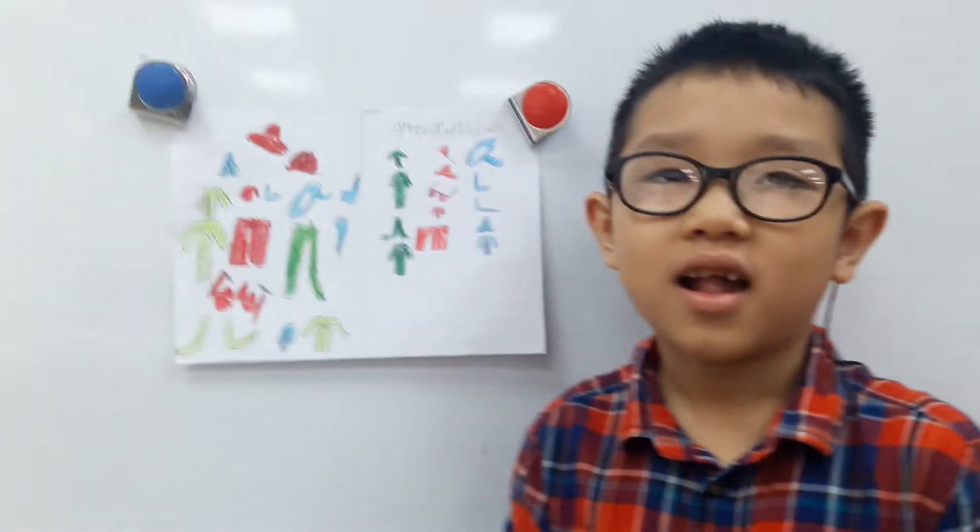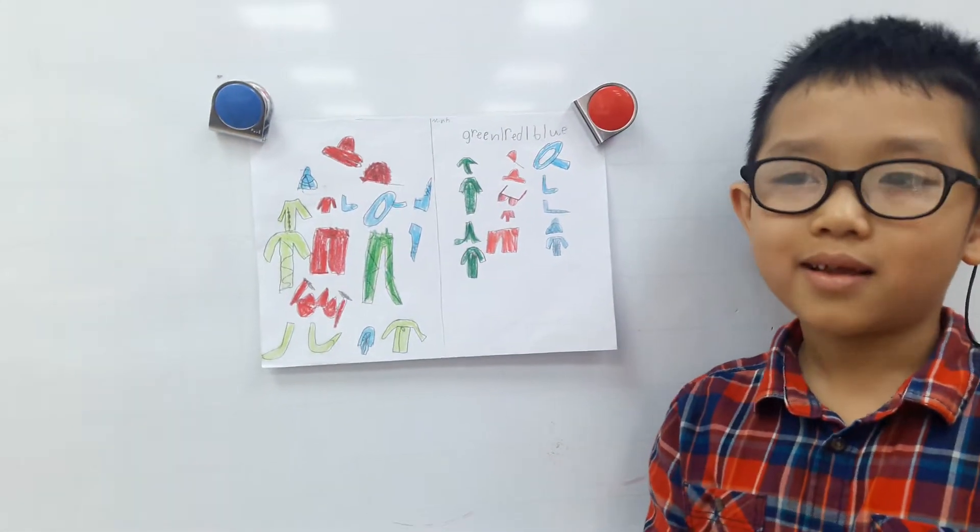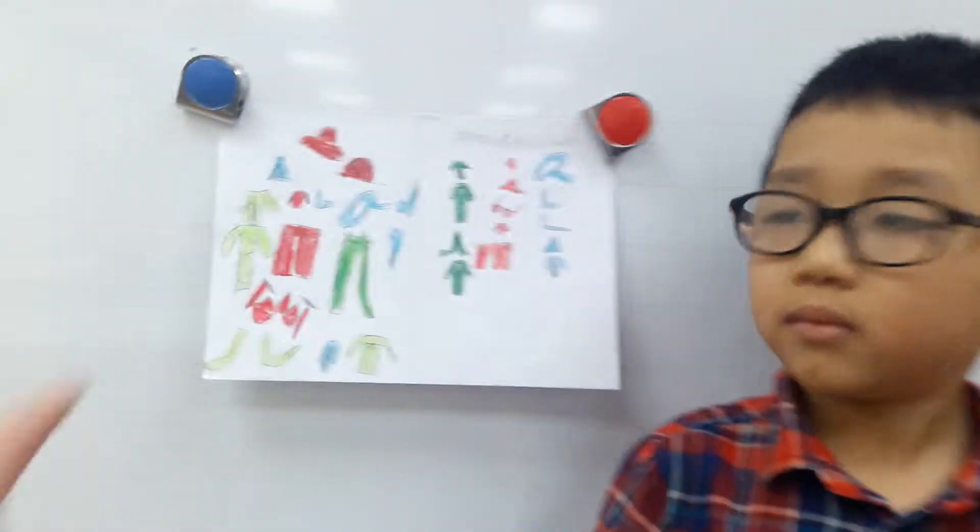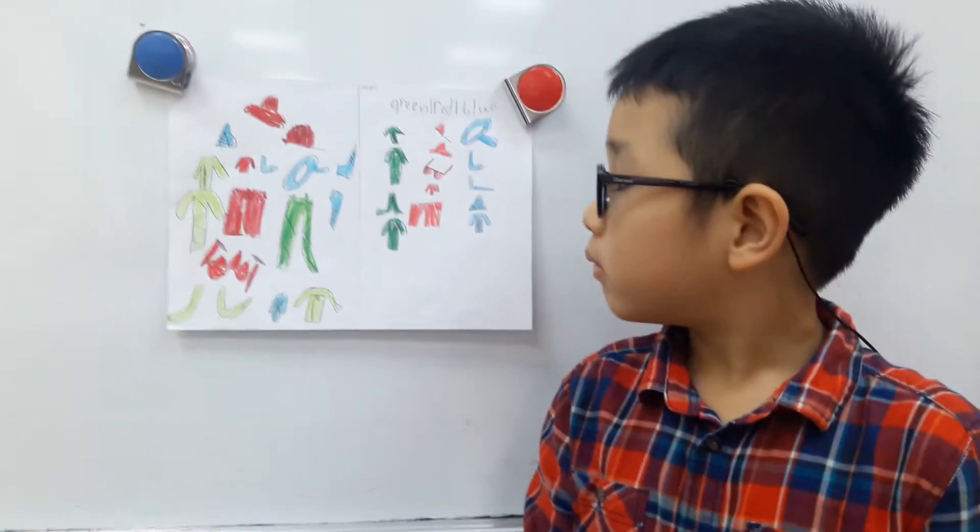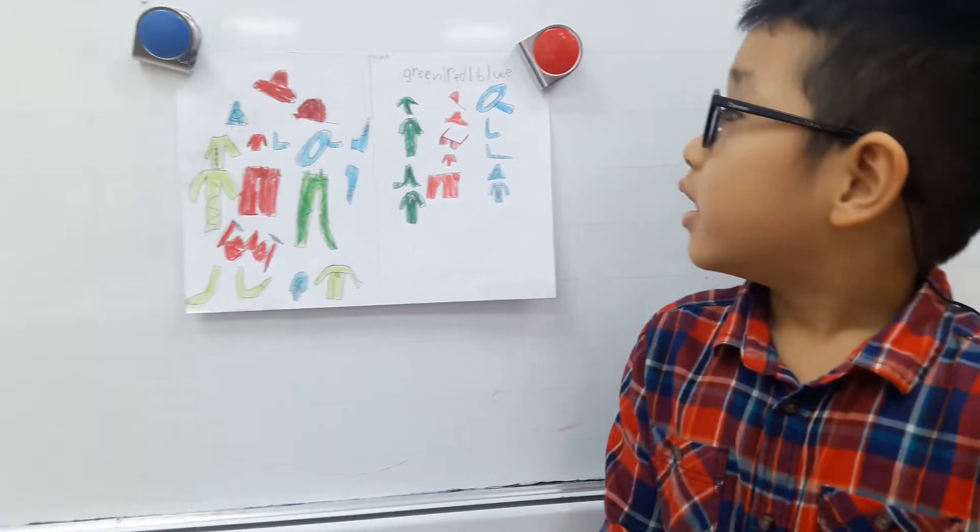How many pieces of clothes all together? Fifteen. Okay. Are they all the same color? Yes. What? All of these are the same color? No. What colors did you use? I used green, red, and blue. Okay.